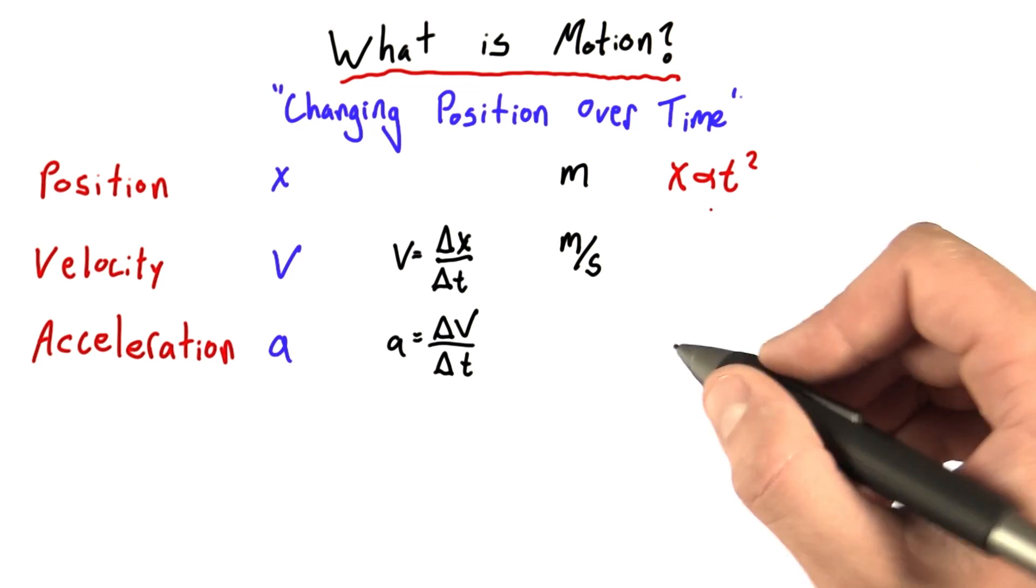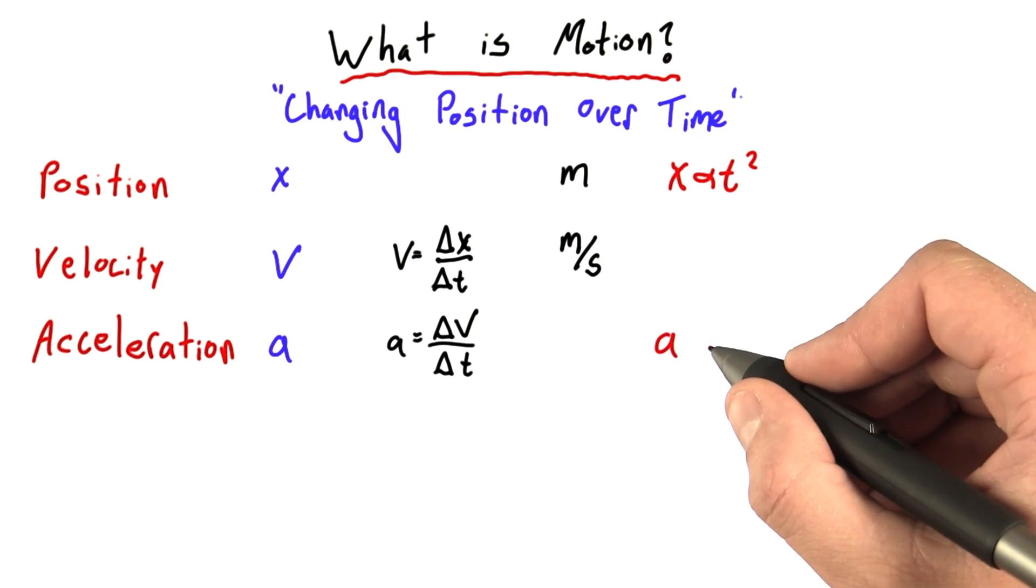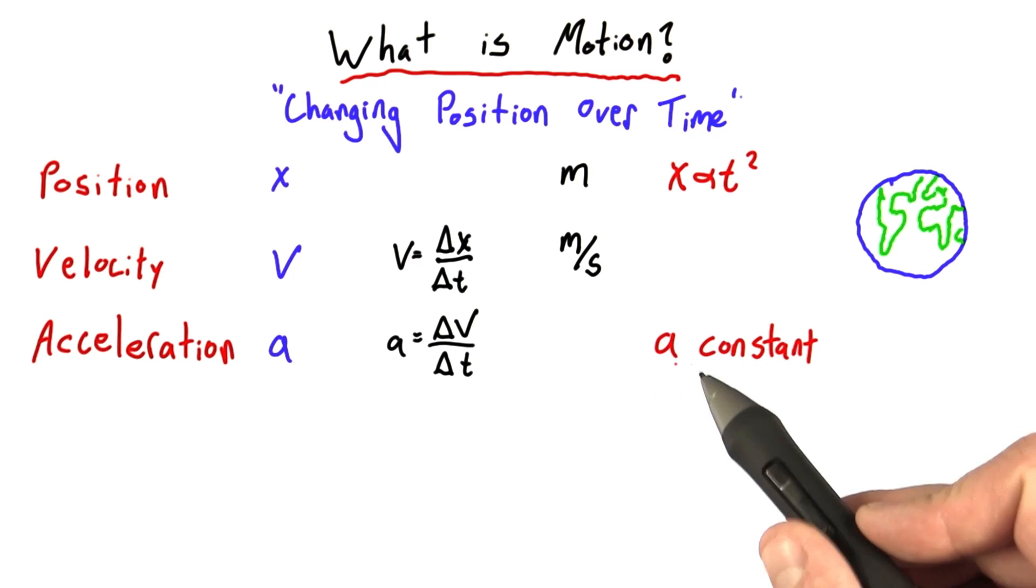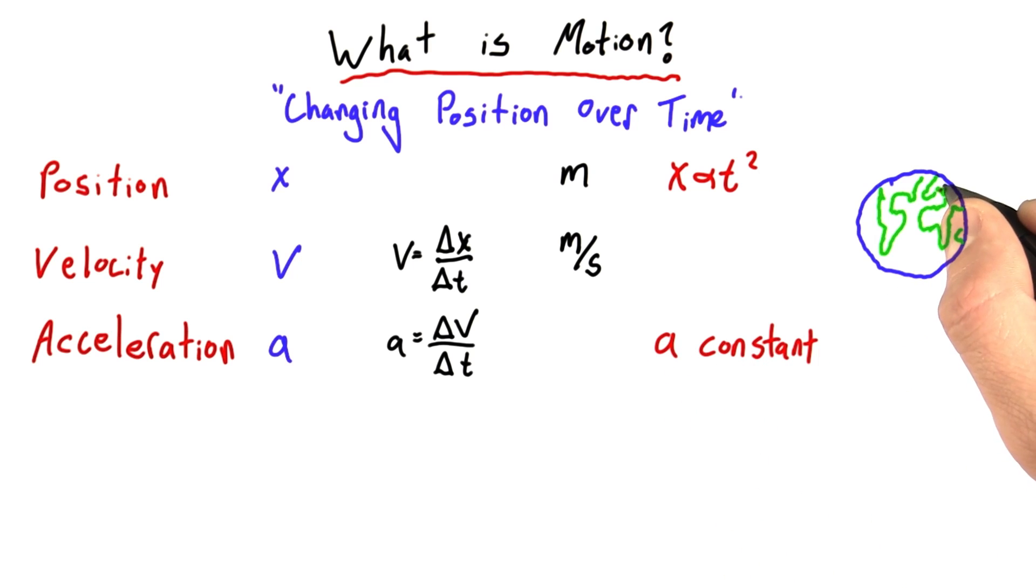And from this Galileo actually inferred that acceleration is constant. And what Galileo meant by constant acceleration was that no matter where you were in the world, whether you're in Pisa or Peru, if you drop an object, it will fall at a constant rate. The acceleration will be the same everywhere and for all objects.